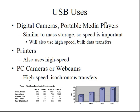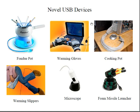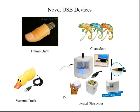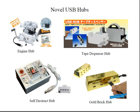Other USB uses include digital cameras, portable media players, printers, PC cameras, and webcams. There are also novelty USB devices such as a fondue pot, warming gloves, a cooking pot, a microscope, a foam missile launcher, and warming slippers. Various novelty USB hubs are also available, including engine-shaped hubs, tape dispenser hubs, self-destruct hubs, and gold brick hubs.